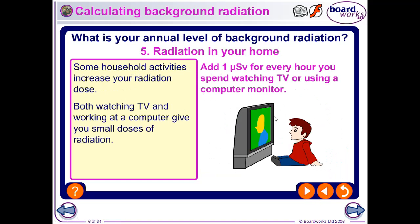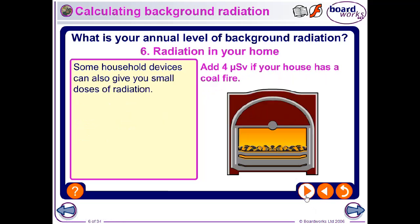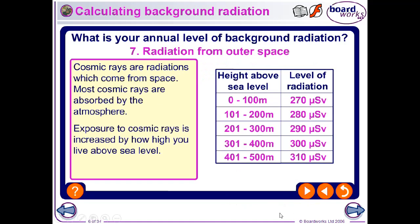Watching television or using a computer monitor gives small doses of radiation — about one micro sievert per hour — not from the monitor itself, but from radioactive dust particles attracted to the screen by electrostatics. Burning coal releases about four micro sieverts. As we go higher in altitude, we receive more cosmic radiation — at about 200 meters elevation, around 290 micro sieverts per year.